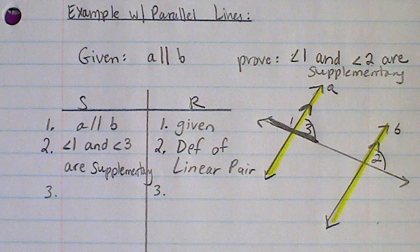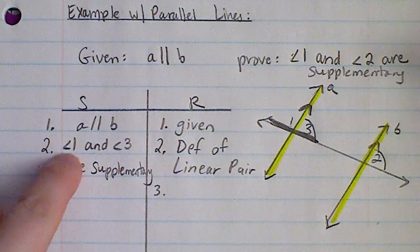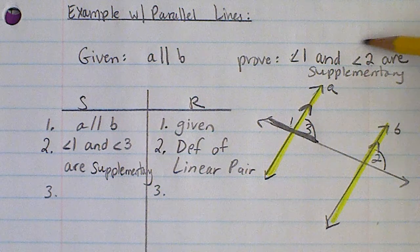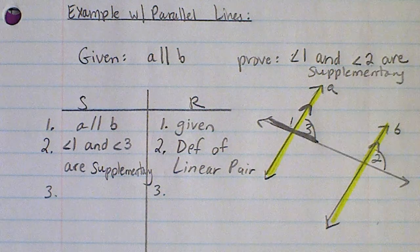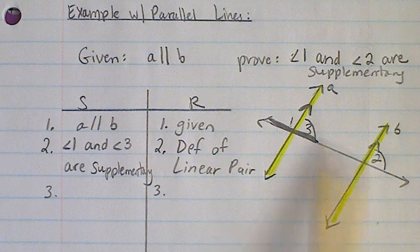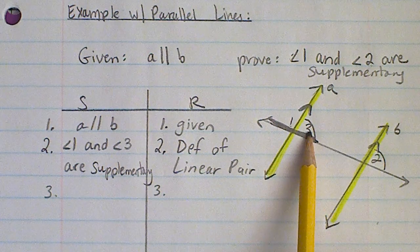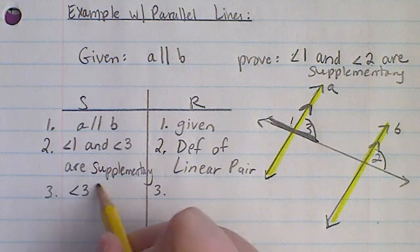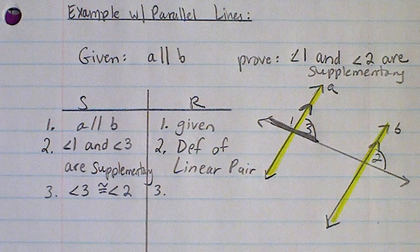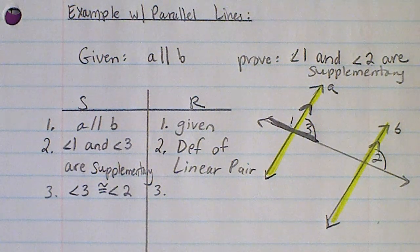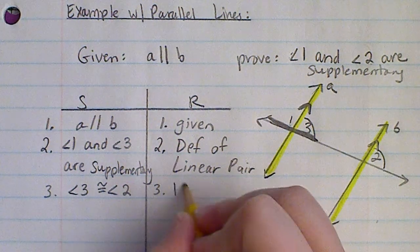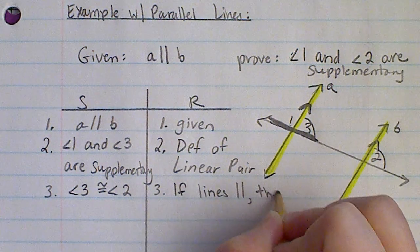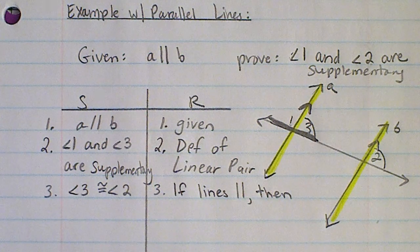Now we work toward what we're trying to prove. Right now we have: angle 1 and angle 3 are supplementary. I need to somehow replace angle 3 with angle 2 — then angle 2 would be supplementary with angle 1. We brainstormed that angles 3 and 2 have a special relationship: because they're corresponding angles and the lines are parallel, we know that they are congruent. So my statement is that those angles are congruent, and my reason is: if lines are parallel, then corresponding angles are congruent.